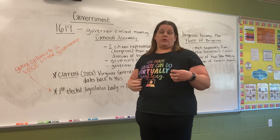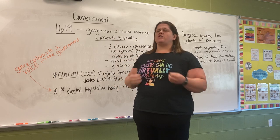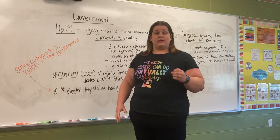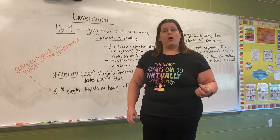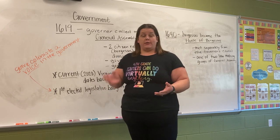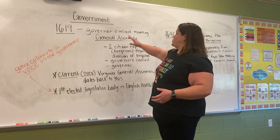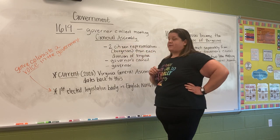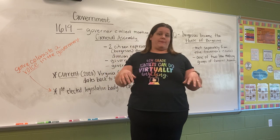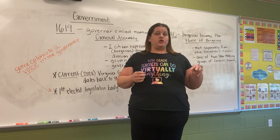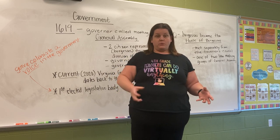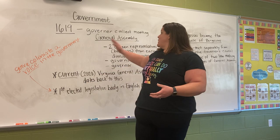The General Assembly is the first elected legislative body in English North America. It's the first group of people that could come together, elected from their peers — selected, picked, voted on — to make the rules and the laws. This General Assembly was made up of two citizen representatives, or burgesses, from each of the divisions.